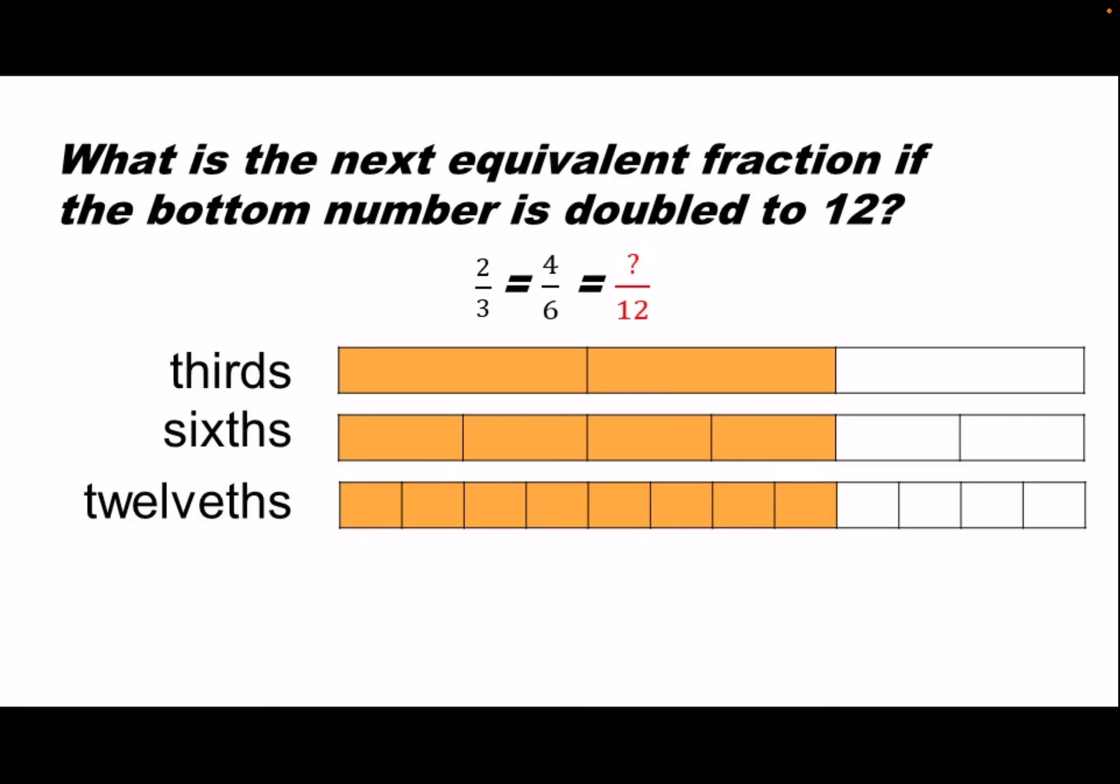What is the next equivalent fraction if the bottom number is doubled to twelve? Now we have two-thirds is equal to four-sixths is equal to an unknown number of twelfths. Do you know the answer?